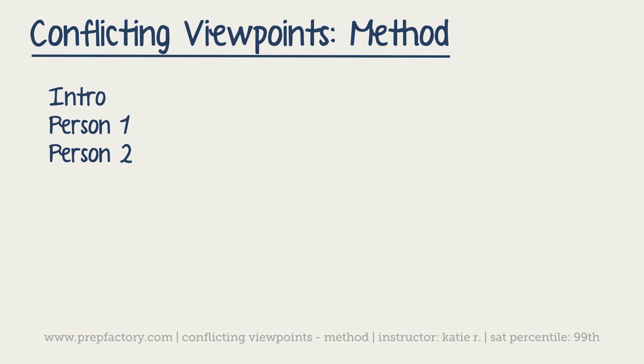So, the idea is that if you read the intro, then person one, and then person two, when you got to the answer choices, you might have kind of mixed up person one and person two's opinion. It would be really easy to do, and if you look at the answer choices for a lot of conflicting viewpoints questions, they purposely will give you answers that would match for person one and also for person two.